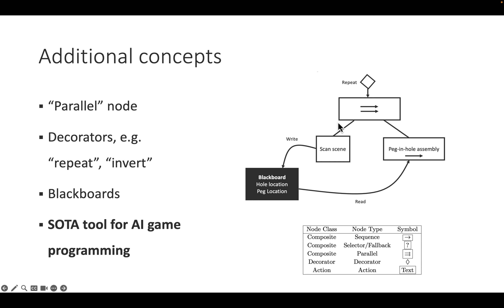Finally we have the concept of decorators, which you can use to change how nodes are executed. For example, the repeat decorator will keep repeating its child, basically creating a while-true loop. You might also have a decorator like 'invert' which changes the outcome of a behavior, and many more — it really depends on which library you choose. It's important to note that the behavior tree idea is the state-of-the-art tool for AI programming in games like ego-shooters and strategy games, and increasingly in industrial robots as well.